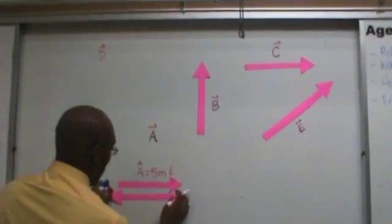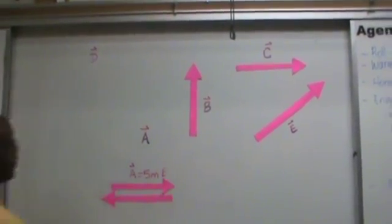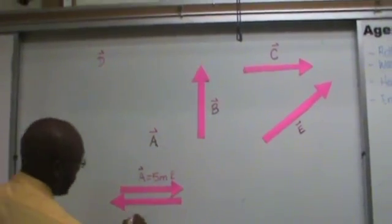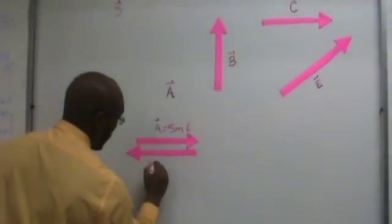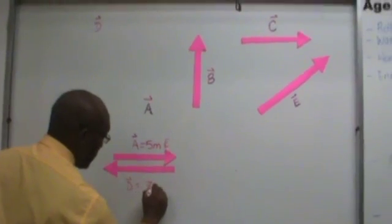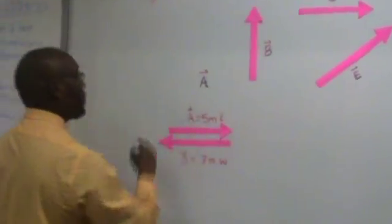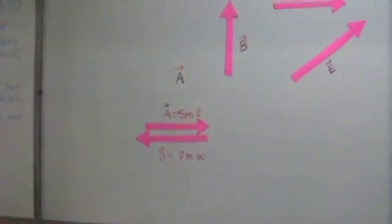You place the vectors head to tail. So this is D, and let's suppose that this is 7 meters west. Now what is the resultant?